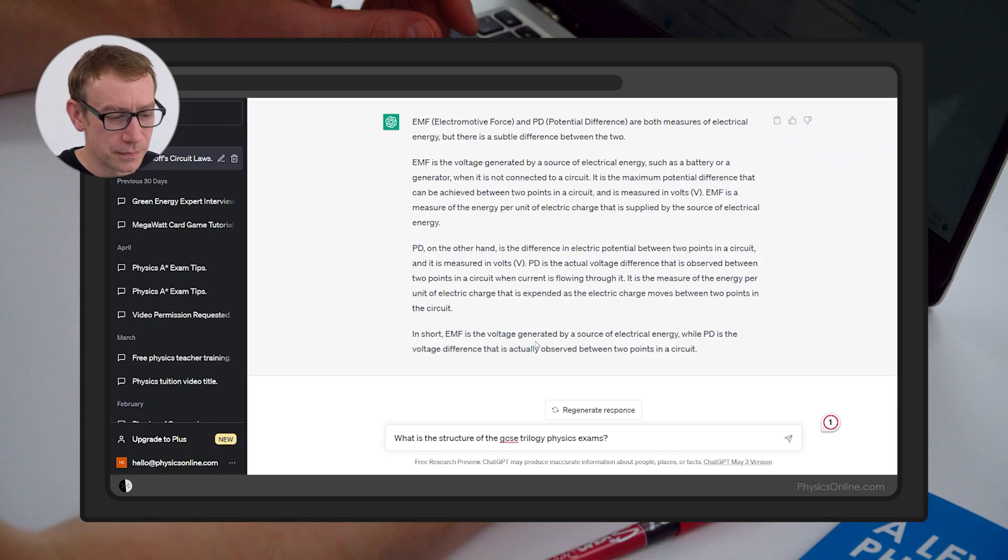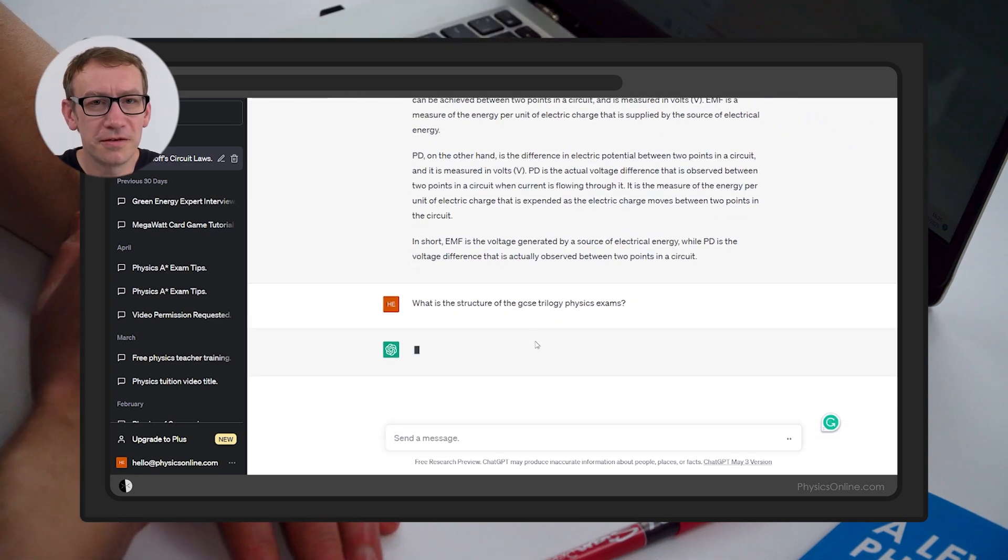I guess the difficulty with AI is that it's probably about 95% correct, and that means most of the time what it tells you is going to be true, so you're going to start trusting it. The difficulty is there are going to be things that aren't quite as they should be. For example, you might ask about what is the structure of the GCSE trilogy physics exams. If you start to go into that level of detail, it's not always as accurate as you think it should be.